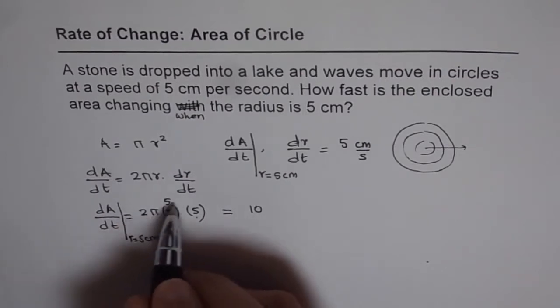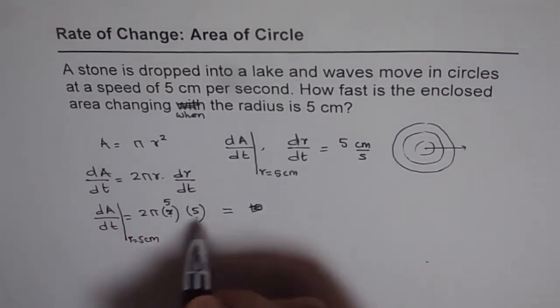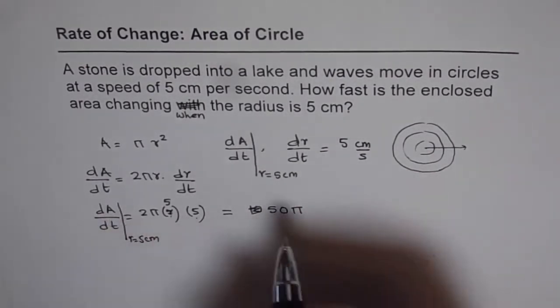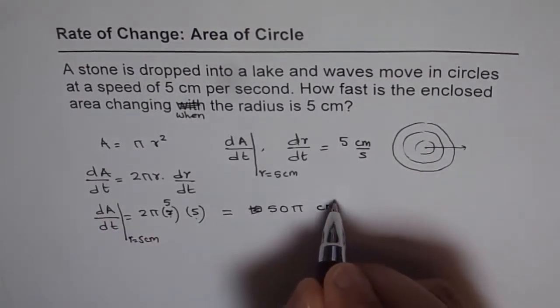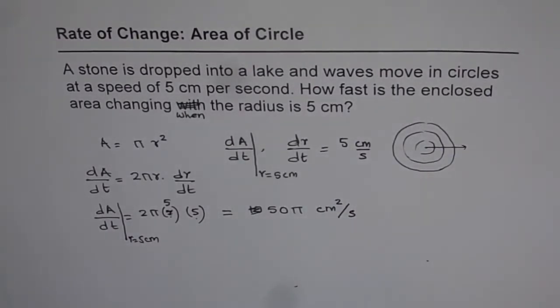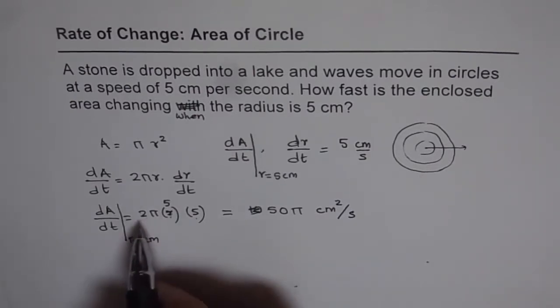So we get 10 times 5 is 50π, and the units will be centimeters square per second. So that is the answer for this particular question. I hope you understand how we got this.